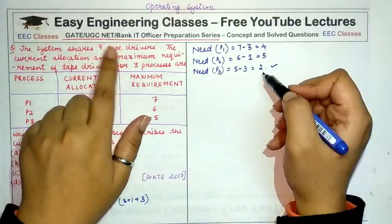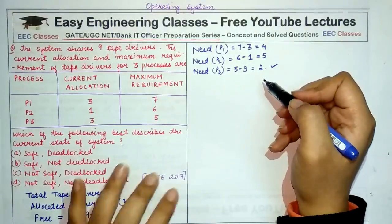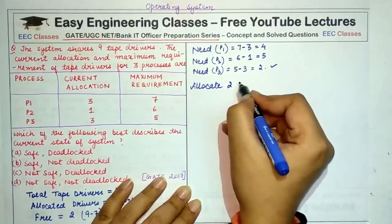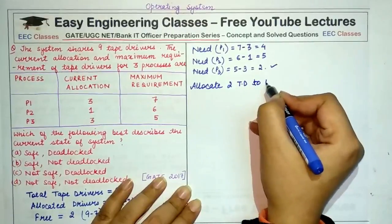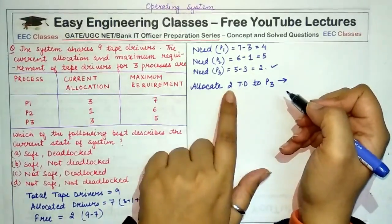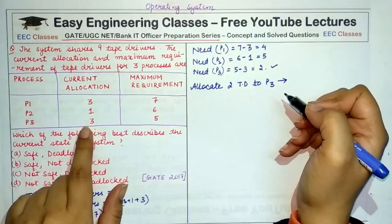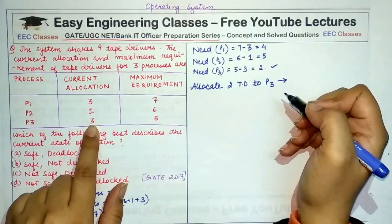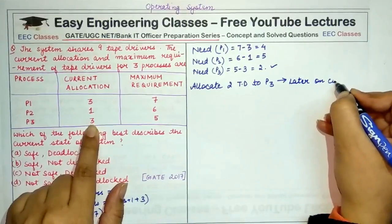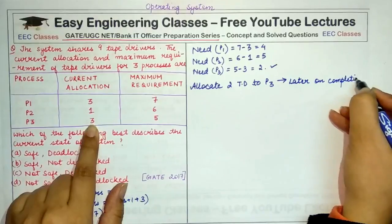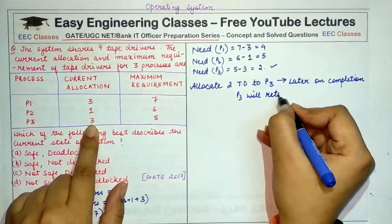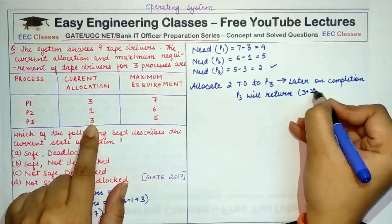So initially, we allocate 2 tape drivers to P3. And after it has completed its execution, it will return these allocated 2 tape drivers as well as those that were initially allocated to it. So later on completion, it will return, P3 would return 3 plus 2, that means 5 tape drivers.